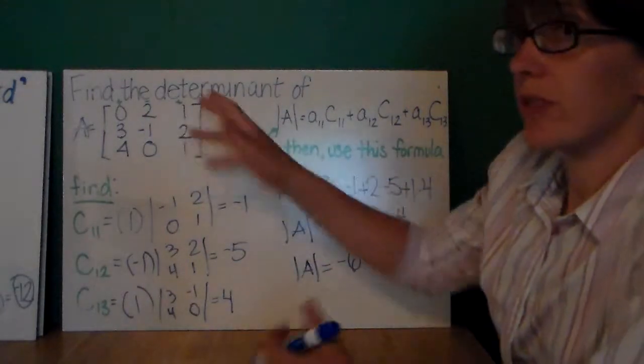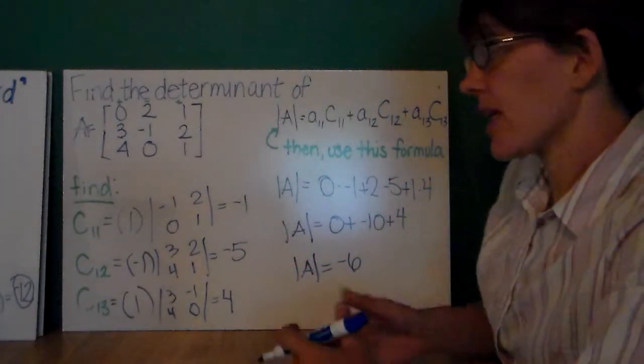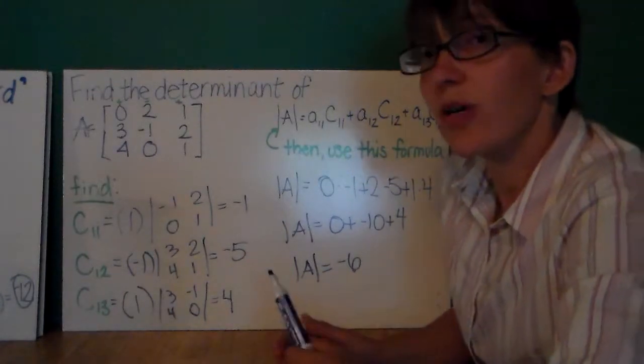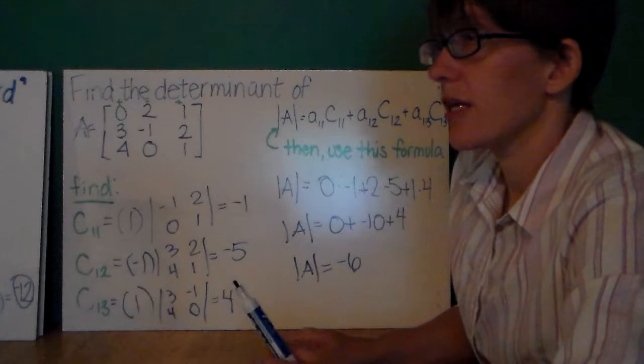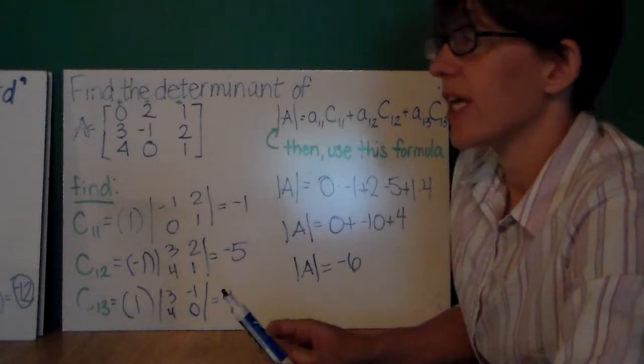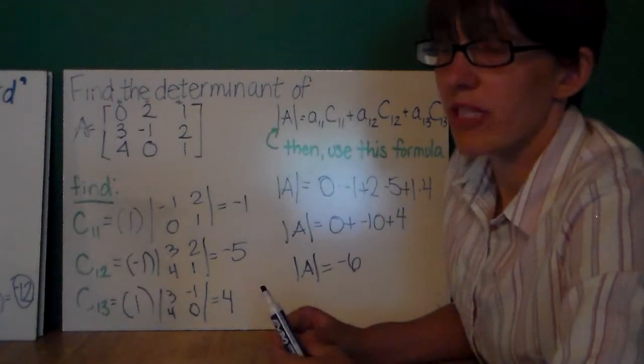But if I had chosen row 2, and done the minors and cofactors off that, and then did all this multiplication, I would still have gotten negative 6. In class, we're going to verify that this still produces a determinant of negative 6 when we use a different set of cofactors from a different row.